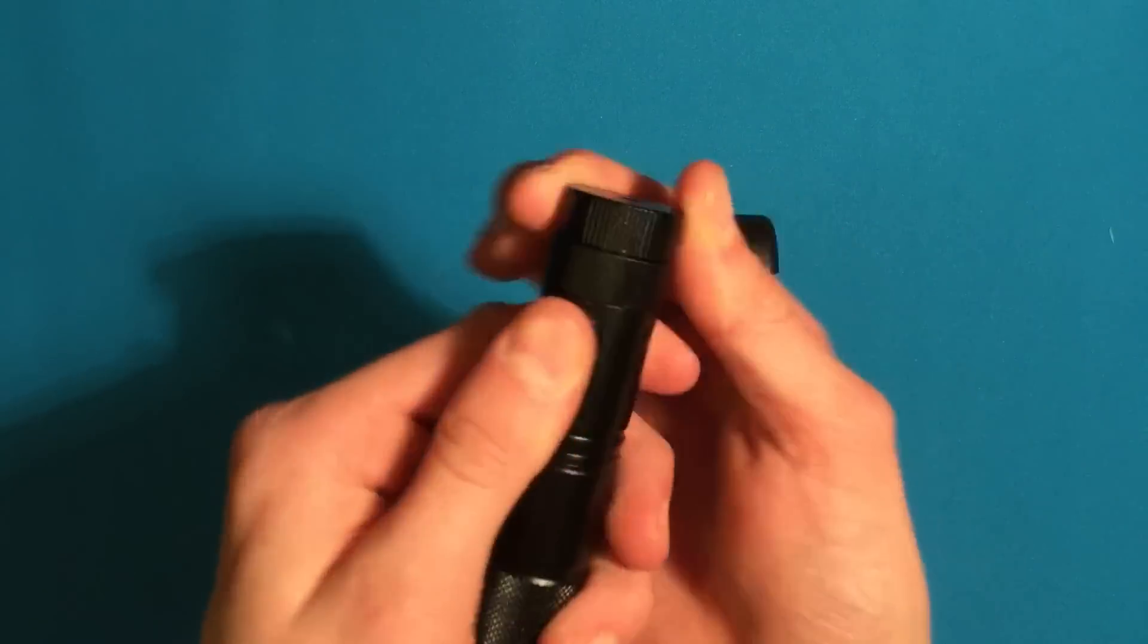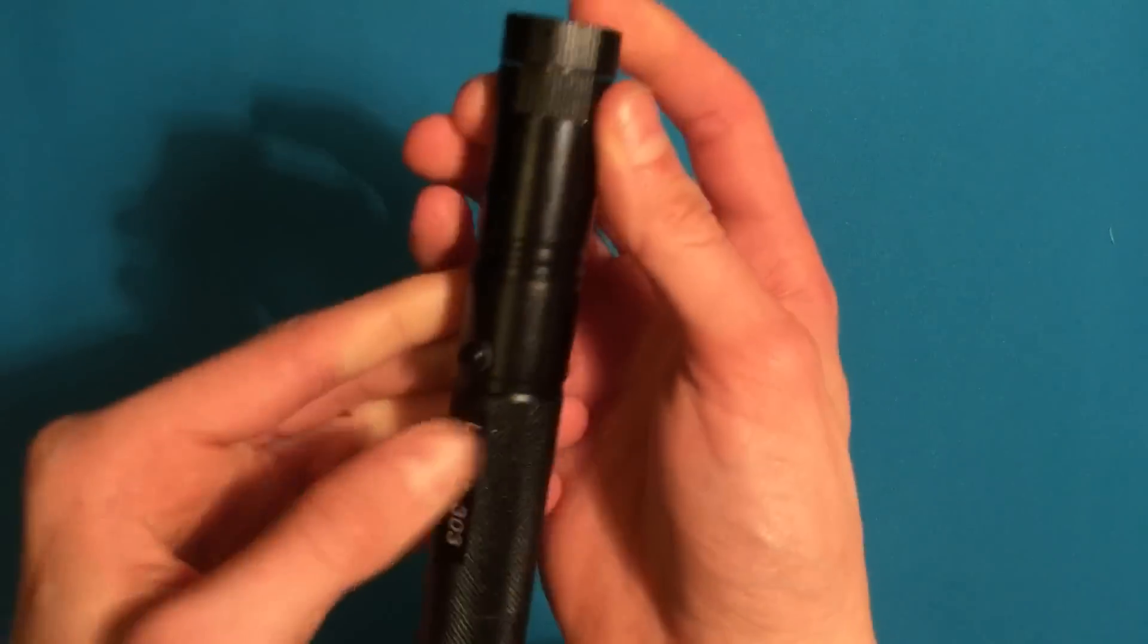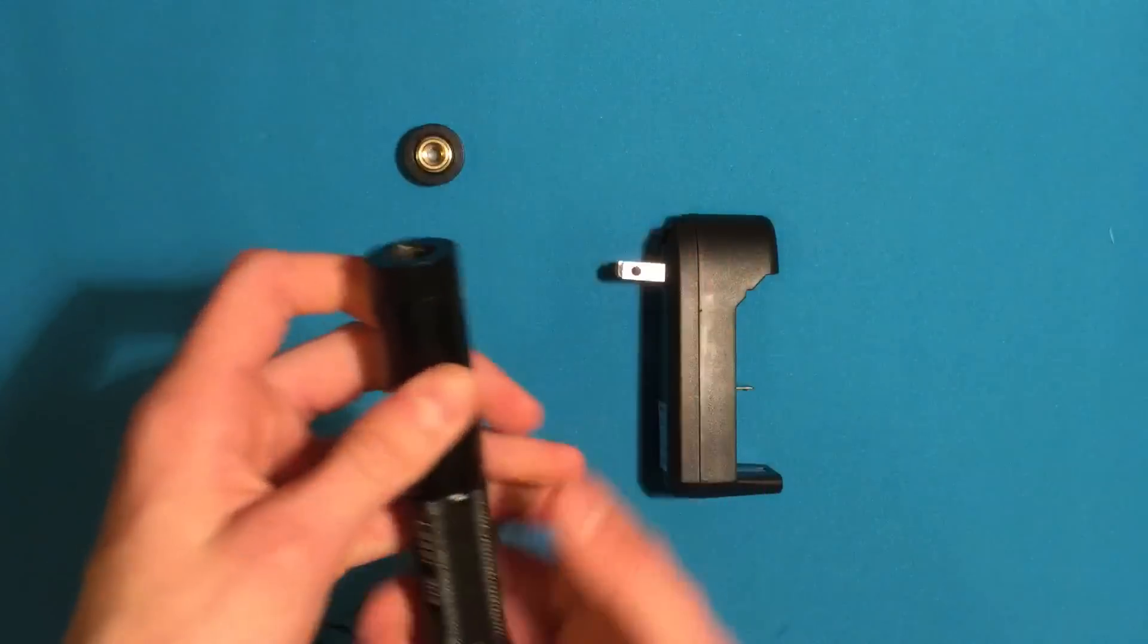Now if you want to take the star cap off, you just keep twisting. I don't know which way, but you just keep twisting and it will come right off.